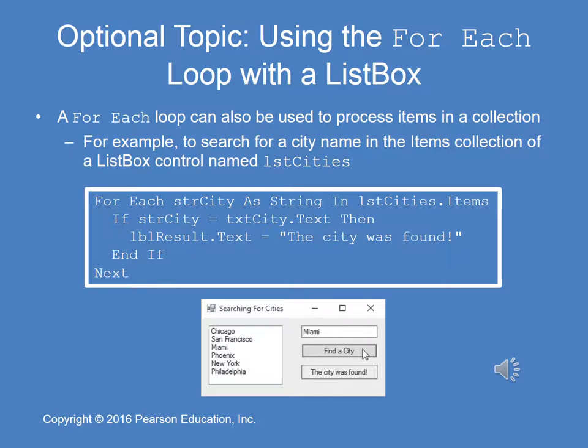The for each loop can also be used to process items in a collection — for example, in the items collection of a list box. In this example, we have a list box named list cities, and we're using the for each to find a specific city. That city is going to come from an input box. In the diagram example, the user types in Miami and then chooses find a city. The for each loop then steps through each of the items in that collection of the list box. If it finds a match, it displays the label message: the city was found.